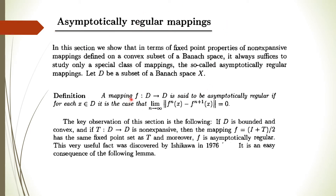A mapping f going from D to D is said to be asymptotically regular if for each x belonging to D, the limit of the norm of f^n(x) minus f^(n+1)(x) goes to 0 as n goes to infinity. Here D is a subset of a Banach space X and f is a mapping on this subset. This mapping is said to be asymptotically regular if this condition holds for each x belonging to D.